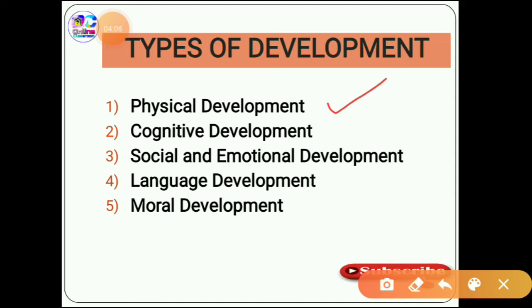Cognitive development focuses on how children learn and process information. It includes understanding the environment using the senses, registering information in the mind, and efficiently retrieving it from memory. Cognitive development indicates the development of intelligence.